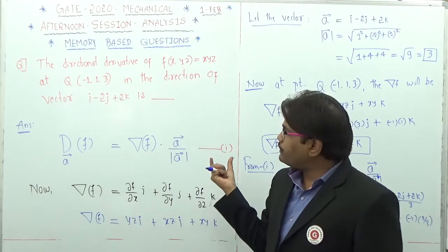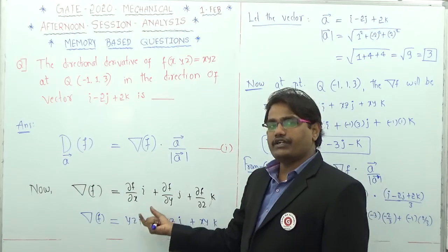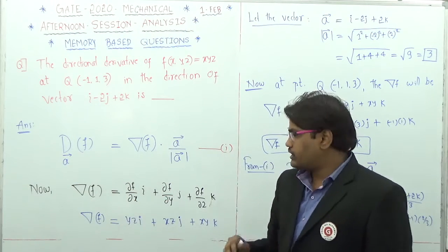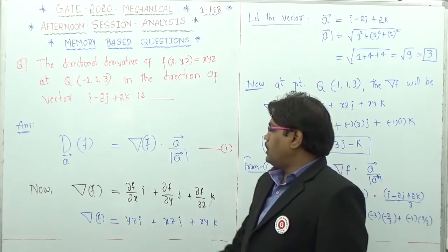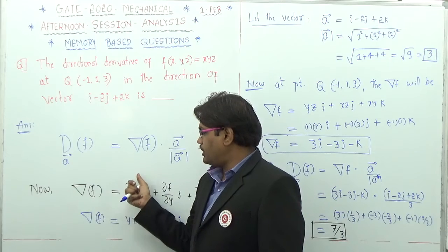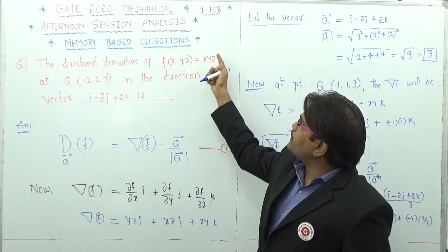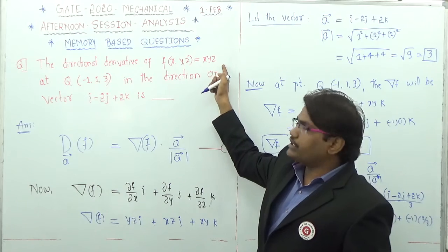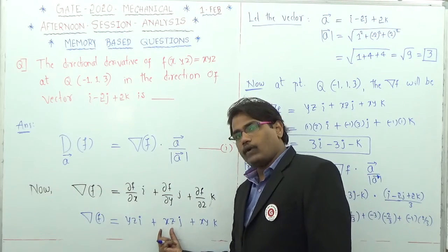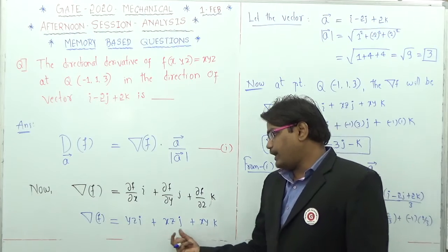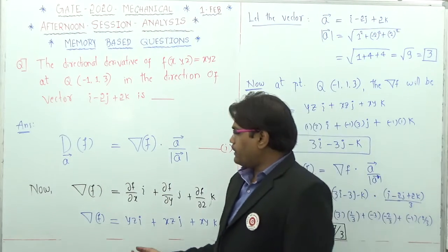Let us find the gradient of the function. The gradient of f is given by del f by del x times i, plus del f by del y times j, plus del f by del z times k. Differentiating xyz with respect to x gives yz, with respect to y gives xz, and with respect to z gives xy. So the gradient is yz·i + xz·j + xy·k.